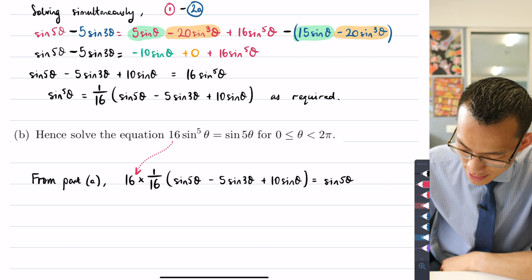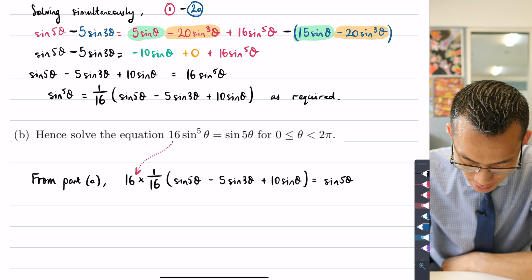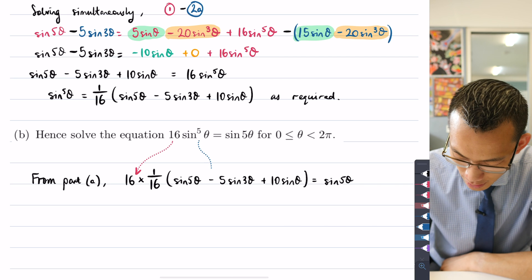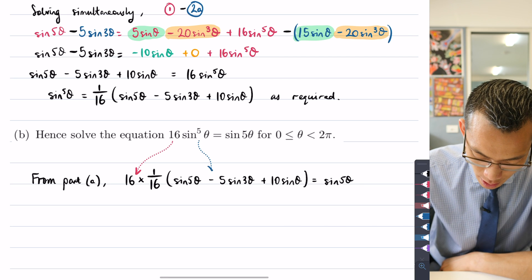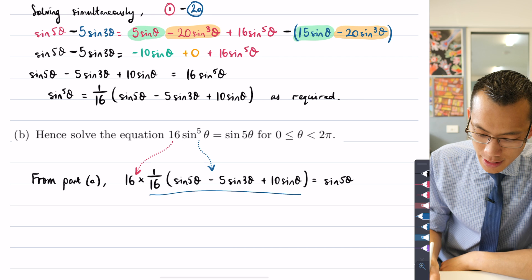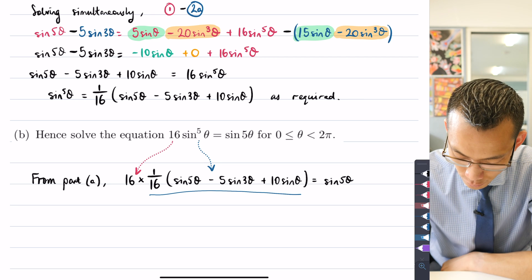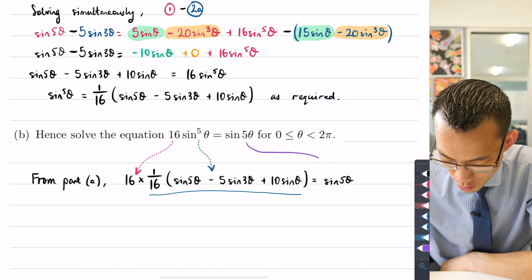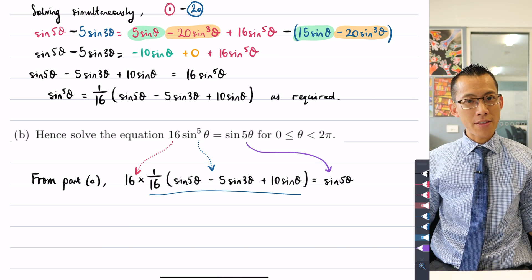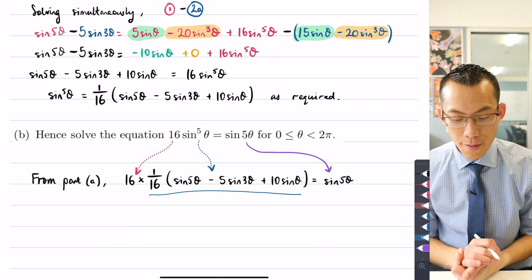The 16 goes to the 16. You can see this sin⁵θ has become this result here, which is everything you can see there. And then for good measure, this guy over here is the sin 5θ on both sides.